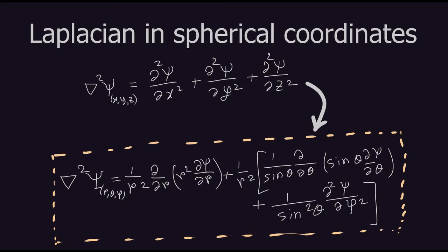We have a function of x, y, z, and the Laplacian operator is acting on this function. We can write this in the Cartesian form of the Laplacian operator. But we are going to try to convert this into the spherical form, which is much more complicated as you can see. It will take some effort, but I will try my best to break down everything and derive from scratch.